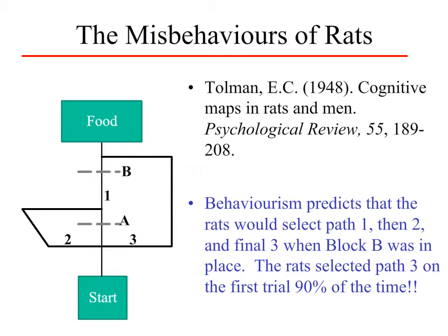However, if we put another roadblock in place — roadblock B — what the behaviorist would predict is that the rats would again take path number two, find out that route is blocked at point B, and then finally take path number three. What was shown, however, was that the rats selected path number three on the first trial over 90% of the time. They didn't take path number two. The rats had a cognitive map — an understanding of the routes and different pathways from the start to the food box.